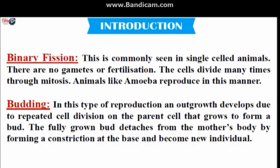Introduction: Binary fission. This is commonly seen in single-celled animals. There are no gametes or fertilization. The cells divide many times through mitosis. Animals like amoeba reproduce in this manner.